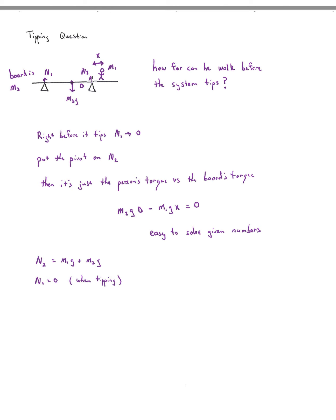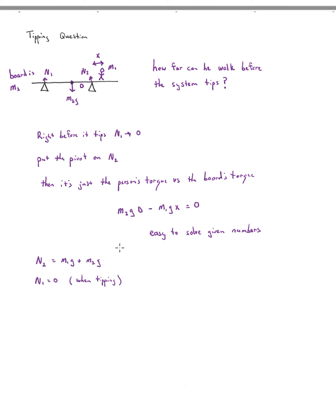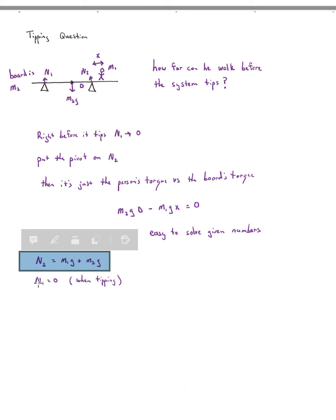X is how far the person is from the pivot, and D is how far the center of mass of the board is from the pivot to the left. Based on the geometry, use subtraction or addition to find D, then use the torque balance equation to find X. If you also want N2 at the tipping point: since N1 equals zero, N2 alone must support the weight of the board plus the weight of the person.